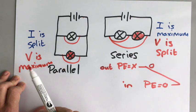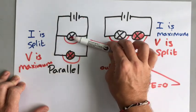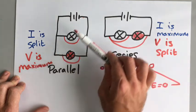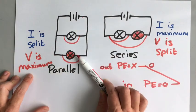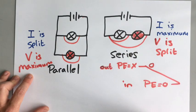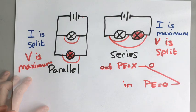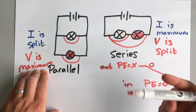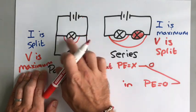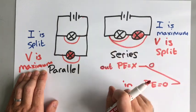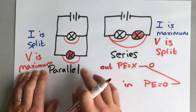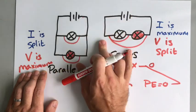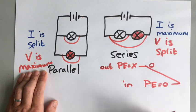In a parallel circuit, the current is split between the two components, but the voltage is at maximum across each component. In a series circuit, the current is maximum all the way through both components, but the voltage is split between them. Because voltage represents the energy given to electrons, bulbs in parallel will be brighter than bulbs in series. If you add more bulbs to a series circuit they get less and less bright, but if you add more bulbs to a parallel circuit they all stay at maximum brightness.